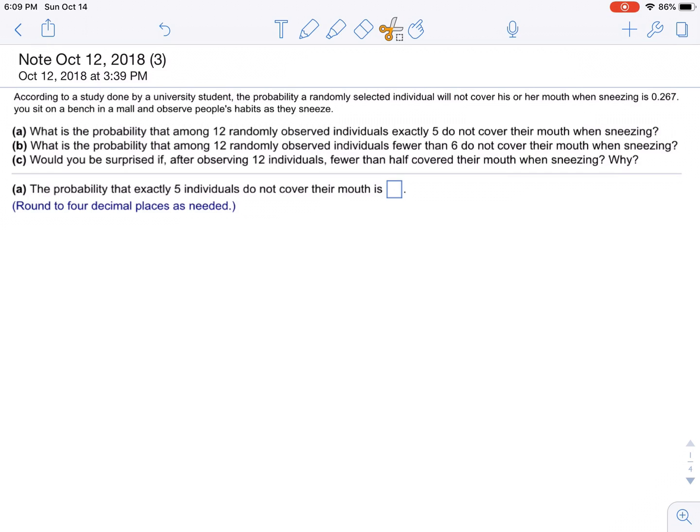Alright, so part A: what is the probability that among 12 randomly observed individuals, exactly 5 do not cover their mouth when sneezing? Important thing to realize is the difference between A and B. Notice that A, we're looking for exactly 5, and then B, we're looking for fewer than 6. When you're trying to find exactly 5, you've got to do PDF.